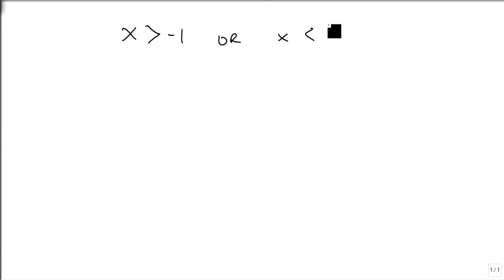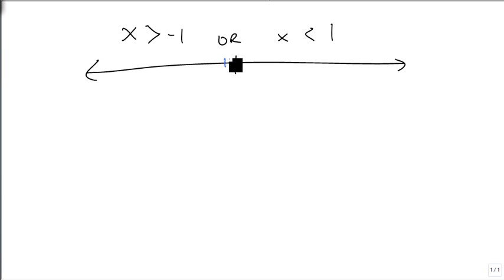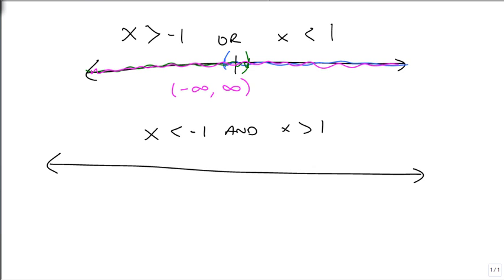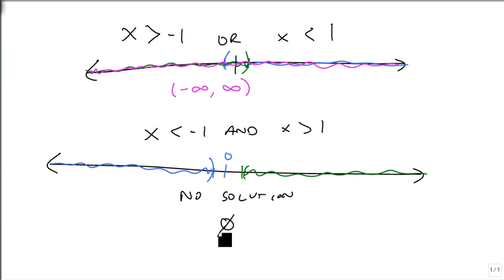Now a couple of things to look out for. Suppose x is greater than minus 1 OR x is less than 1. When we graph this, minus 1 goes to the right and plus 1 goes to the left, and everything is shaded — so the answer is minus infinity to infinity. Likewise, if we do this with an AND: x is less than minus 1 AND x is greater than 1, there's nothing shaded on both sides, so there is no solution — which we write as a zero with a line through it. OR problems always have some type of answer.